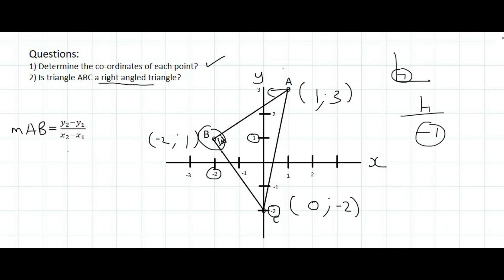So the y value of point number 2 is 3, right, because that's this one over here, minus the y value of point number 1, is that over there, over the x value of point number 2, which is that one over here, and the x value of point number 1 is minus 2. And if I go and work that out, I end up with a value of 2 over 3.